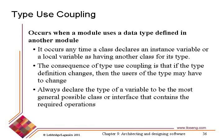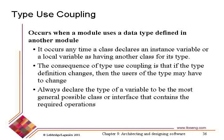Using data types that are defined elsewhere is a form of coupling. If I have a package and I'm using data types defined in another package, I'm coupling my package to that other package. If that other package changes, I might have to change myself. Before declaring variables of types from some other package, we want to think: do we really want to do this? Is this the only solution? It often is, but we have to be aware that the more we do of that, the more coupling we have between packages.